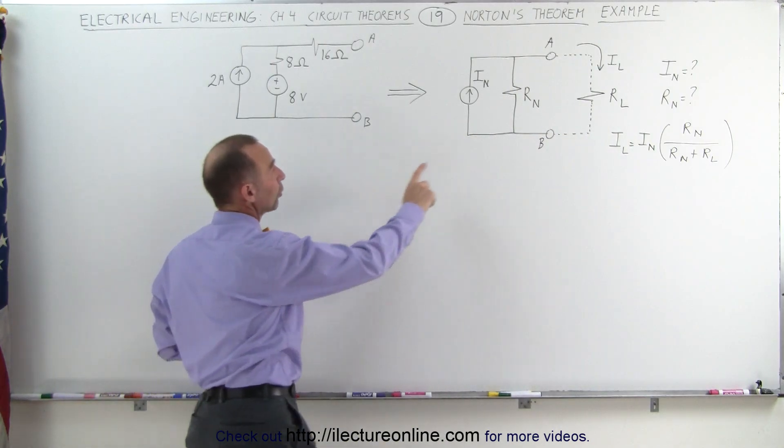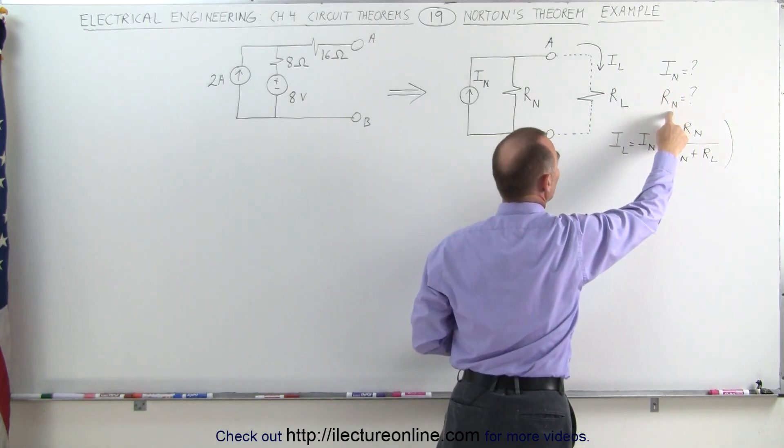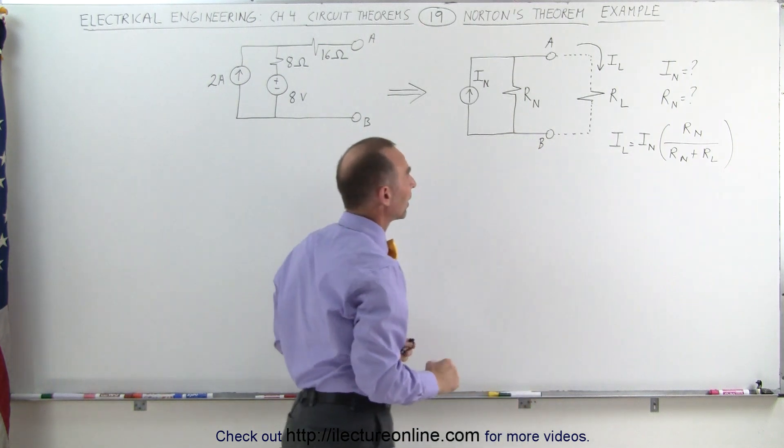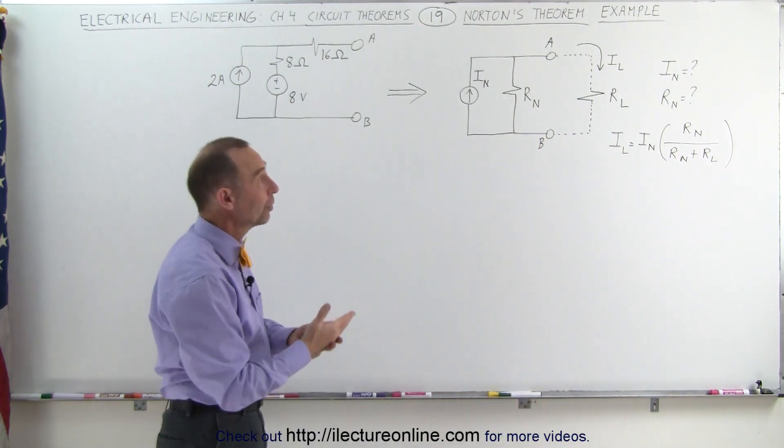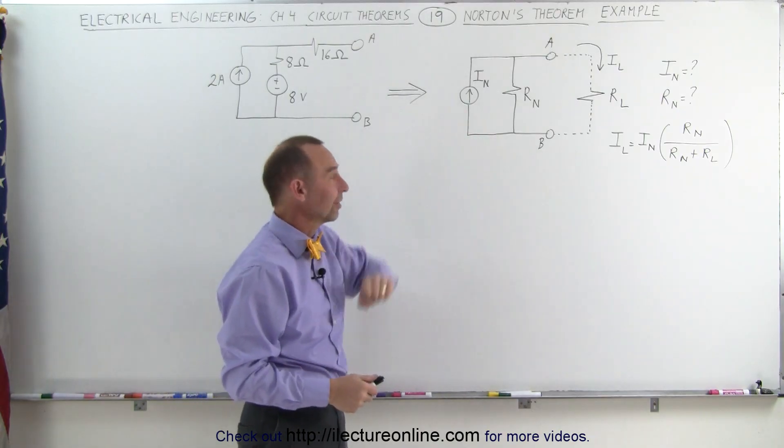To find the current through the load resistor we need to find the Norton's current and the Norton's resistance so that the load current is equal to this equation right there. So the question is how do we find Norton's current and Norton's resistance for the equivalent circuit that looks like this?